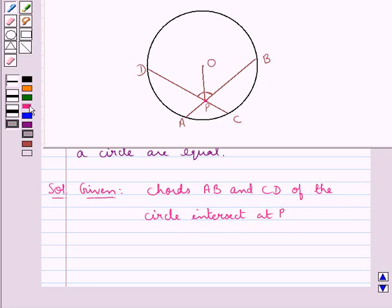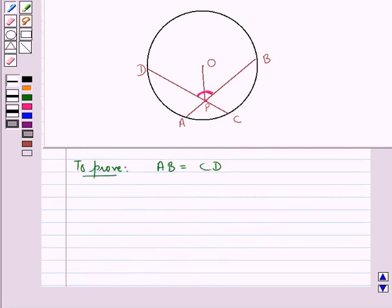Then we are given that OP bisects angle BPD. That is, angle OPD is equal to angle OPB. And we need to prove that AB is equal to CD.